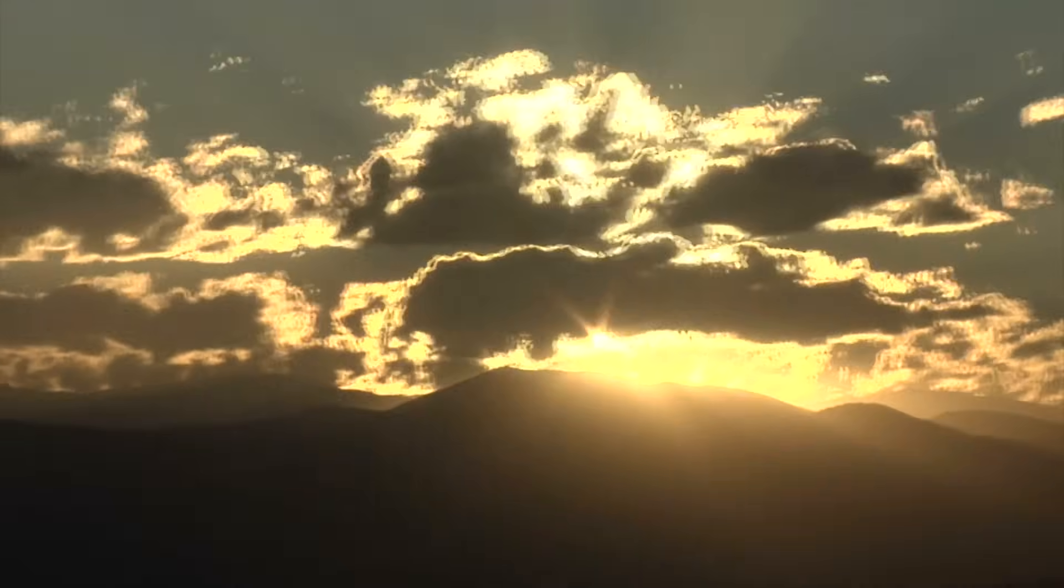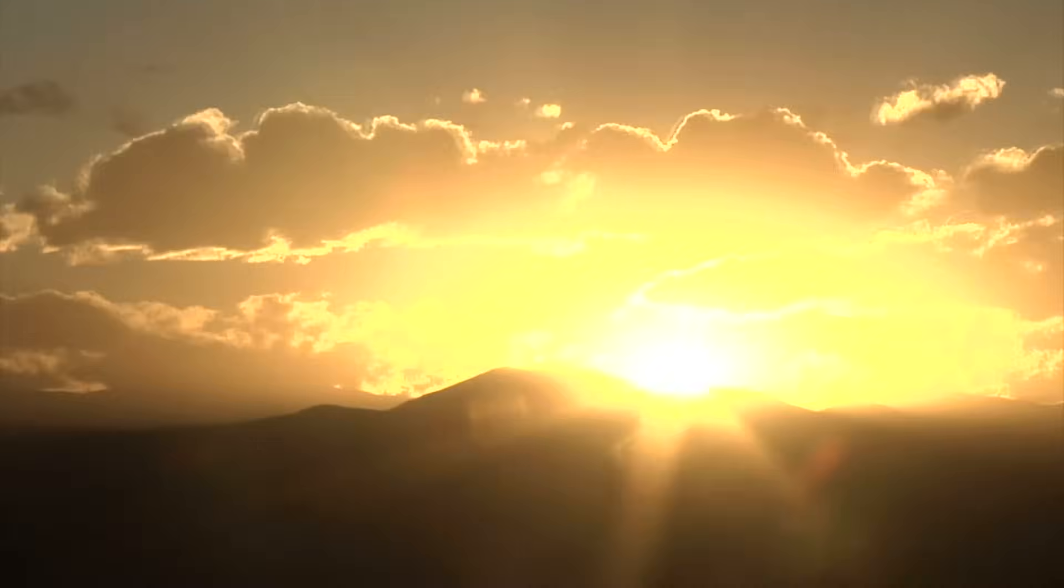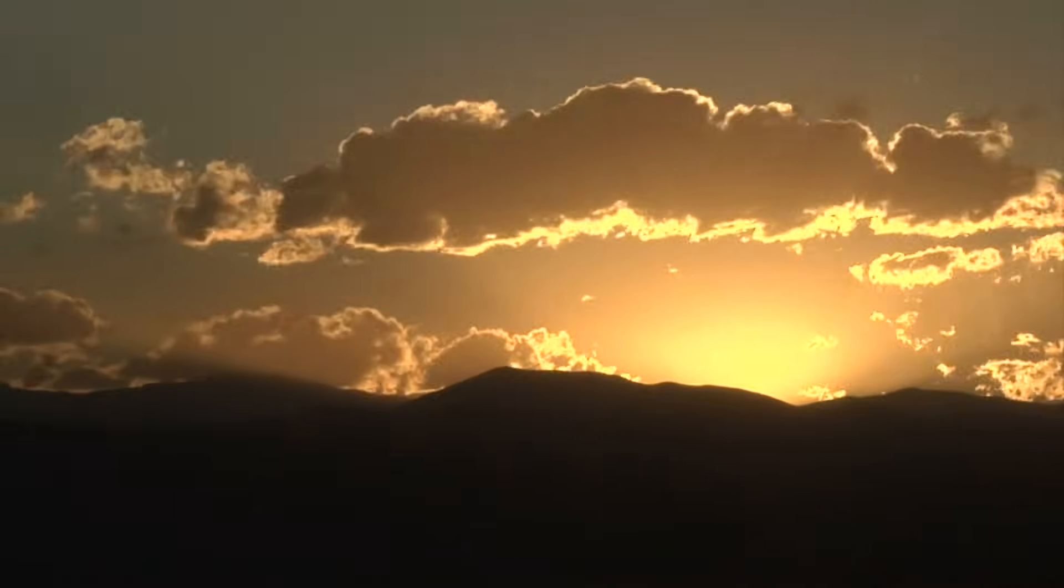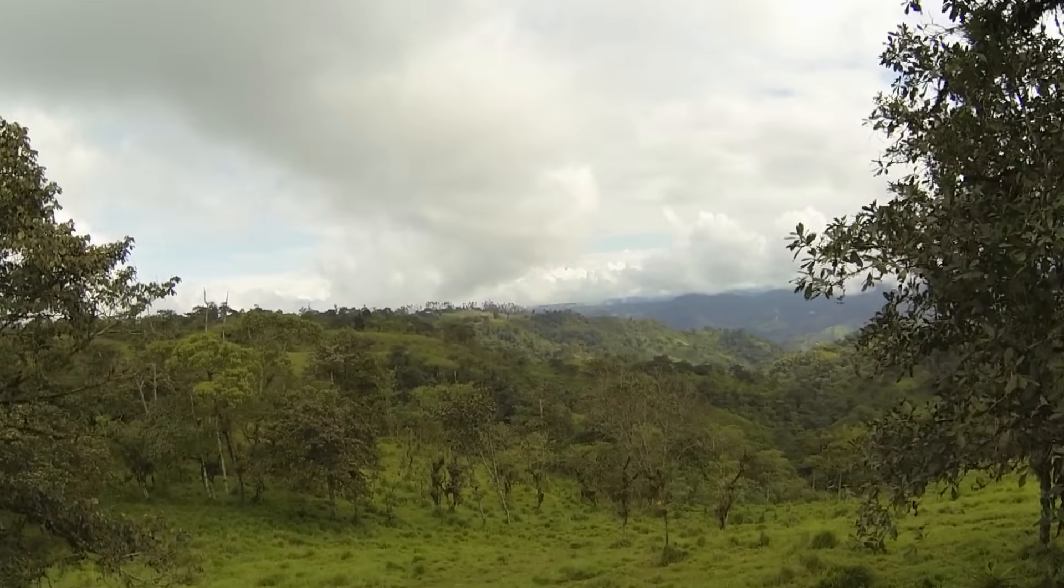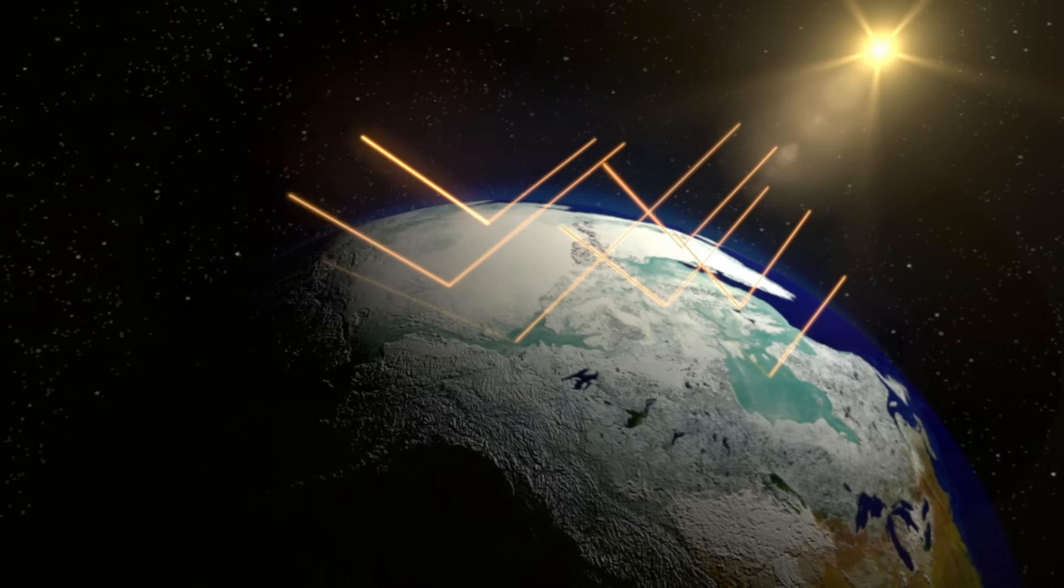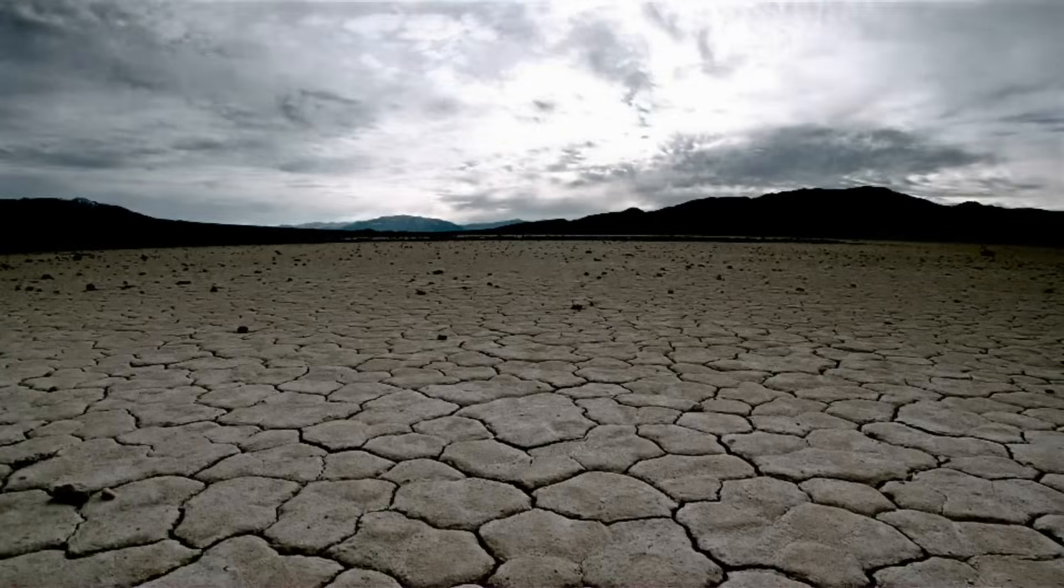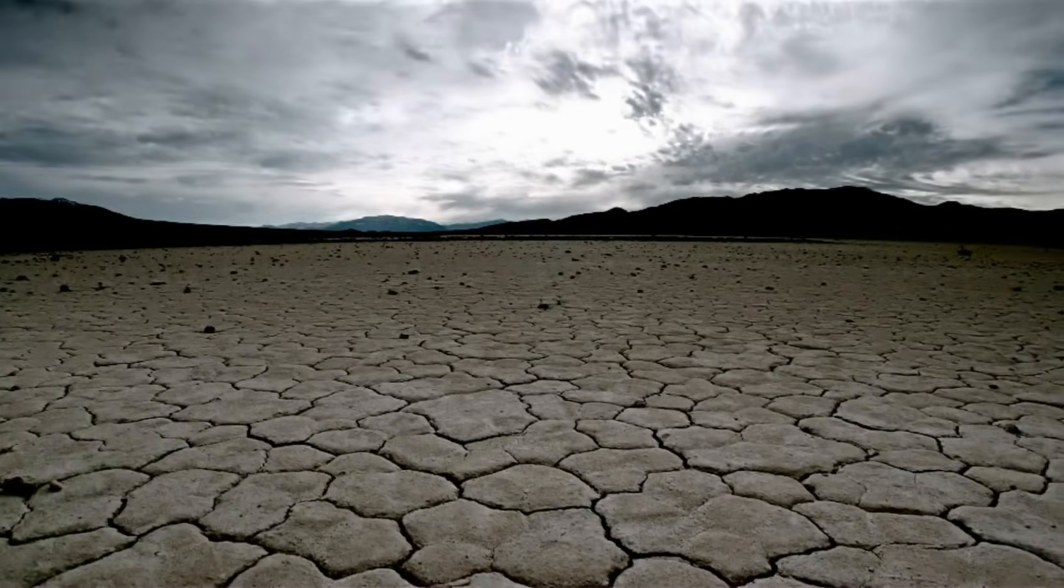When the clouds dissipate, sunlight once again warms the water below, and the cycle continues. Other areas of the world have similar cycles. Polar ice caps, for example, reflect sunlight, while dark land surfaces soak it up.